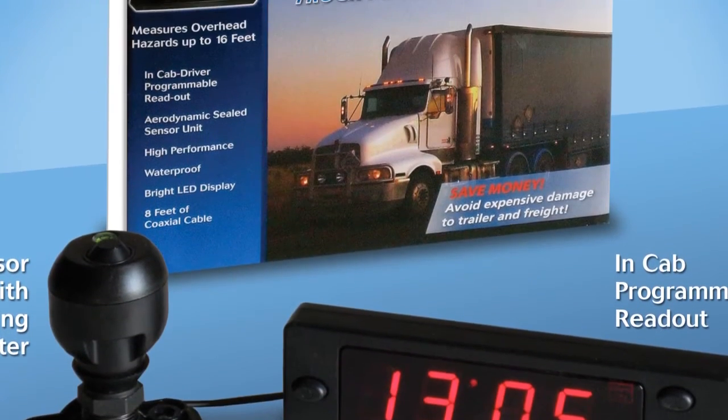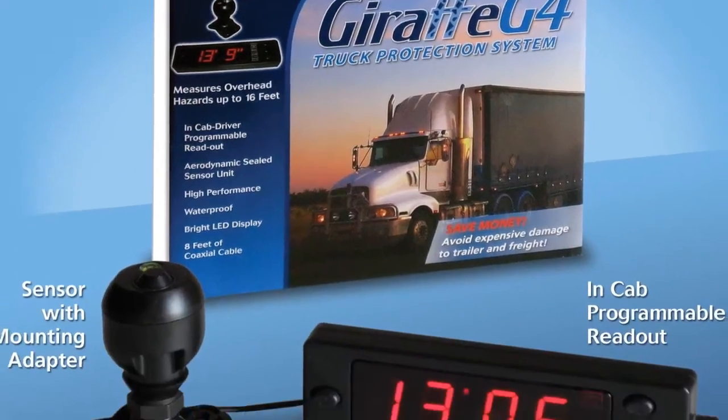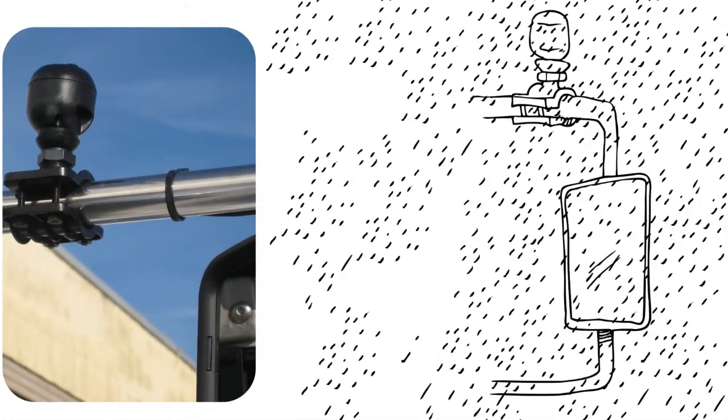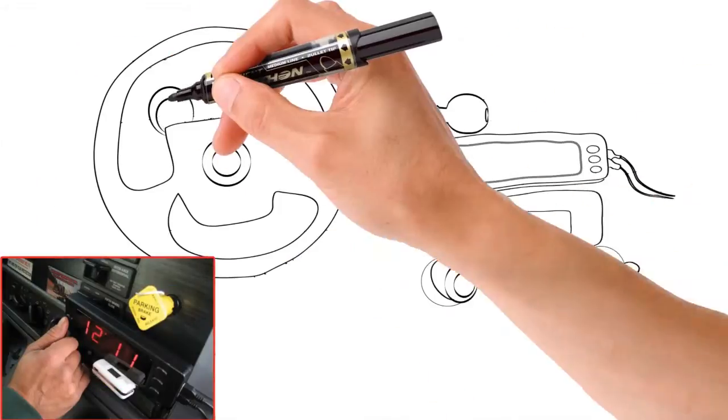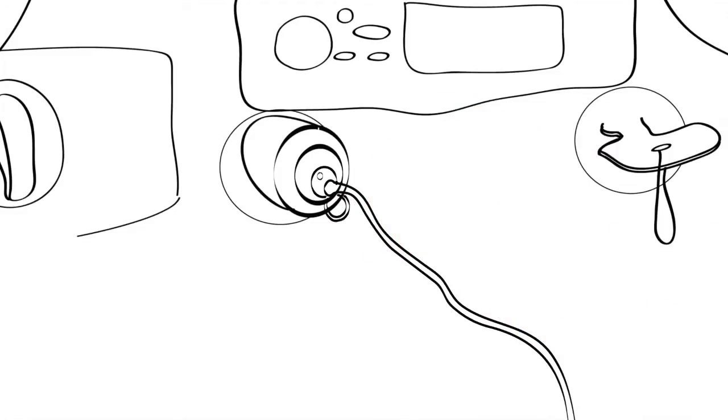This is the Giraffe G4 system that will protect your tractor trailer or RV from hitting an overhead obstacle. It's a two-part system, an exterior sensor, water and weatherproof, and an in-cab programmable readout for the driver. It gets powered from your vehicle's 12-volt system.